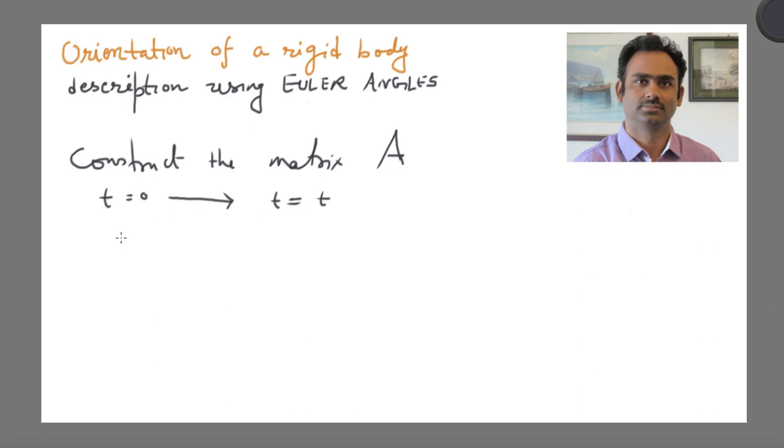Okay, so let's see how to write the matrix A. What your matrix A should do is, when you start from the original configuration at time t equal to 0, let's say your coordinate system coincides with the inertial coordinate system. So the x prime axis is parallel to x, y prime is parallel to y, z prime is parallel to z.